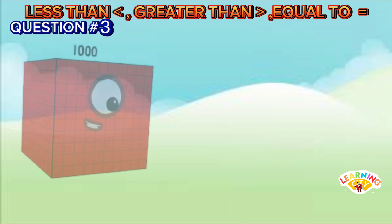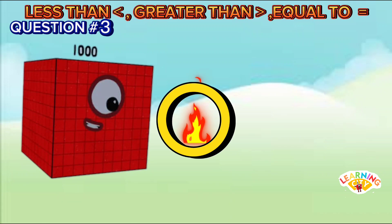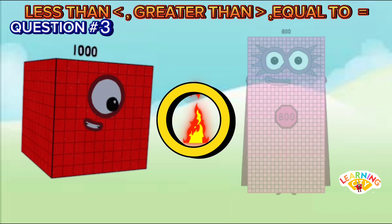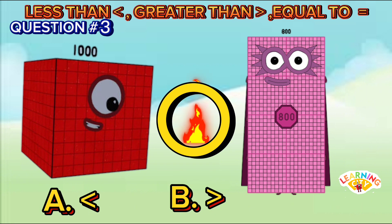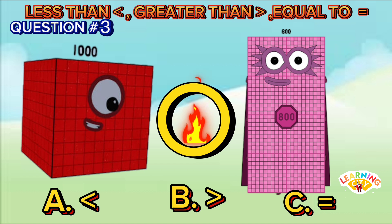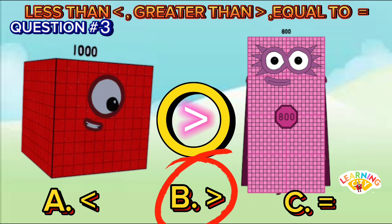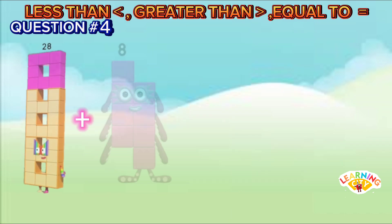1,000 and 800. Is it A less than, B greater than, or C equal to? The answer is B greater than — 1,000 is greater than 800.